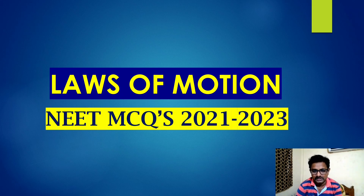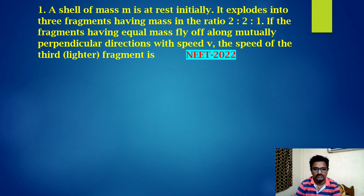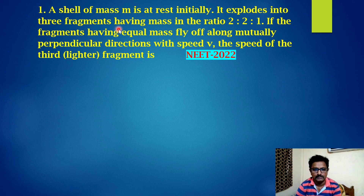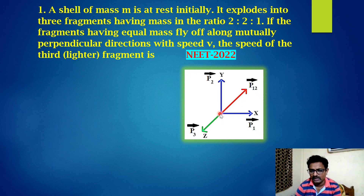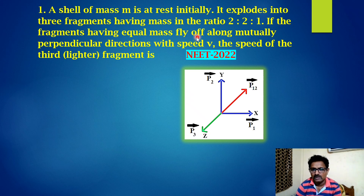Laws of Motion NEET MCQs 2021-23. Here the first question: a shell of mass m is at rest initially. It explodes into three fragments having mass in the ratio 2:2:1. Look at the figure. One fragment is moving along the x-axis with momentum p1, a second fragment is moving along the y-axis with momentum p2, and the third fragment is moving along the z-axis with momentum p3. The fragments having equal mass fly off along mutually perpendicular directions with speed v. Find the speed of the third fragment.